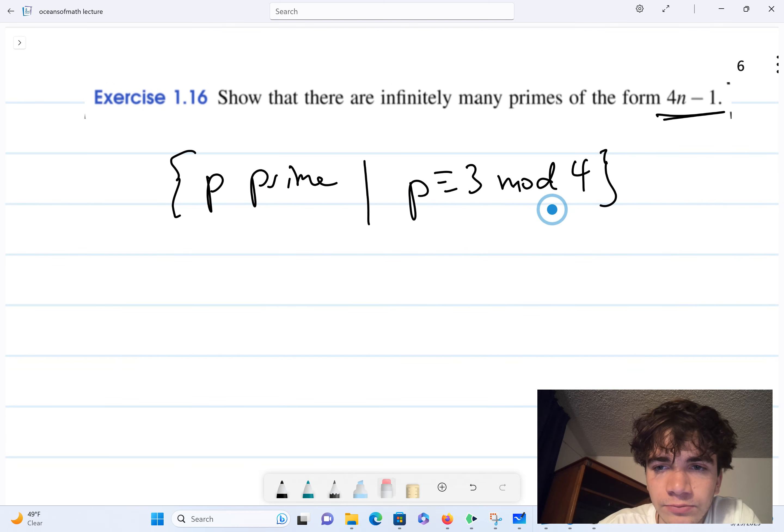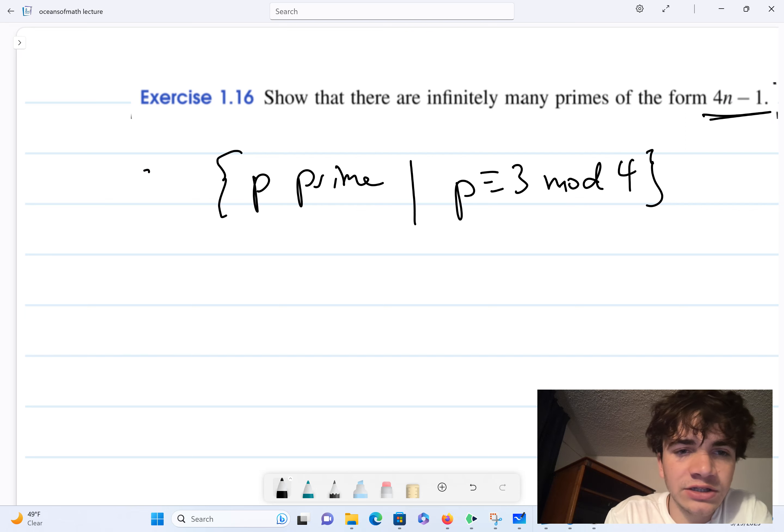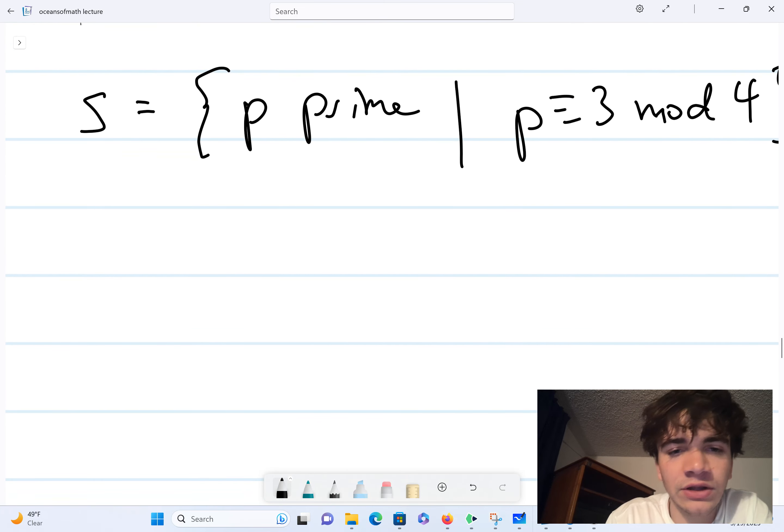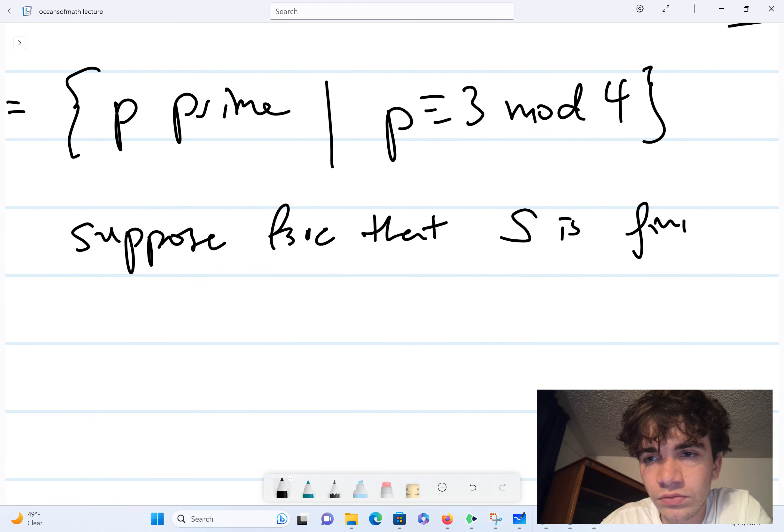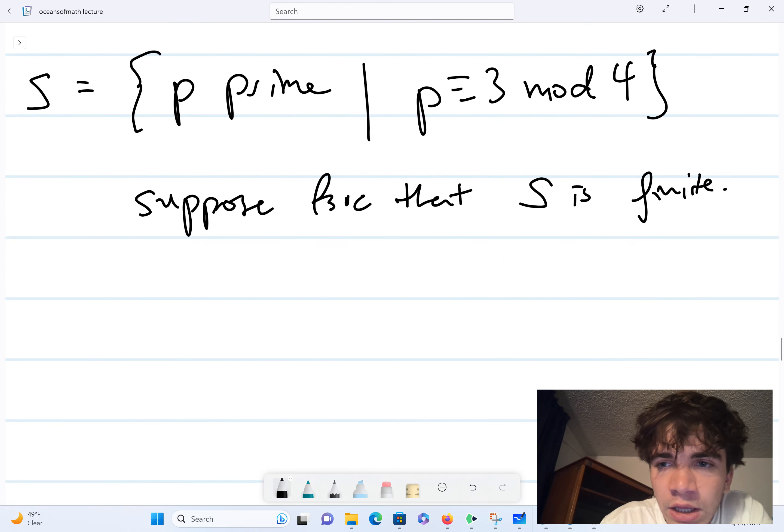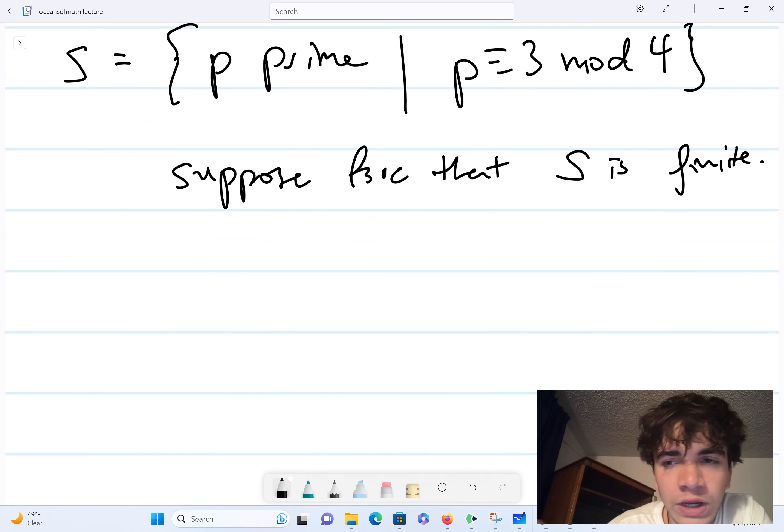So now that we have that out of our belt, let's look at this set of all prime numbers that are equivalent to 3 mod 4, and we want to show that this set is infinite. So how do we show it's infinite? Let's suppose that it's finite, that S is finite. Now we know that since it's finite, it will have a maximal element. So let p star be equal to the maximum of S.